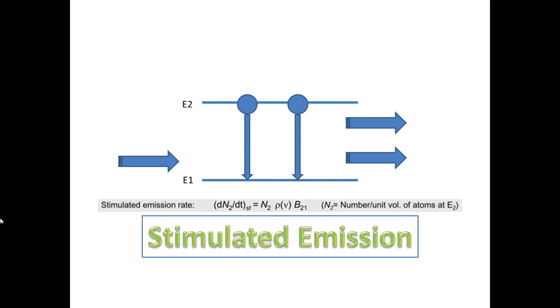Now if you look at this equation for stimulated emission, you can see that it is very similar to the one for absorption. We have N2 instead of N1, where N2 is the number of atoms per unit volume at the energy E2, and we also have the Einstein coefficient B21 which is related to a transition from E2 to E1.